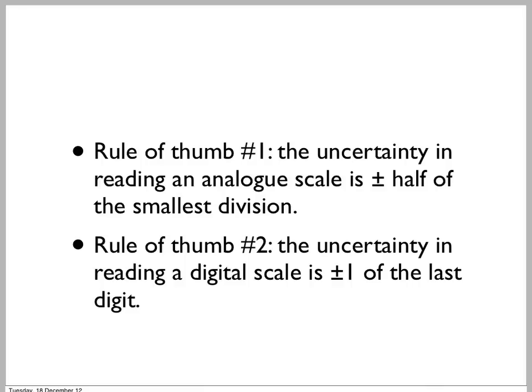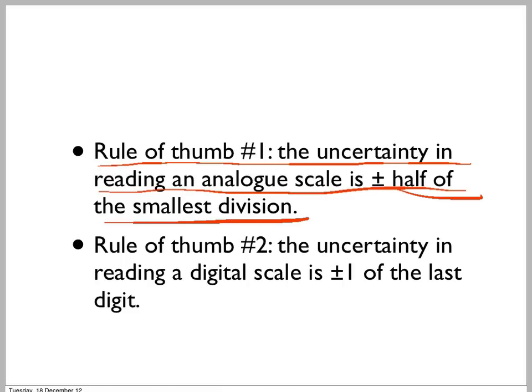So here are the rules. The uncertainty in the reading of something like a scale analog is plus or minus half the smallest division. And the uncertainty in the reading of a digital scale is plus or minus one of the last digit. Different people will come up with different rules, but these are not far wrong, and they're the ones we'll use in this course. It certainly won't give you any grief.